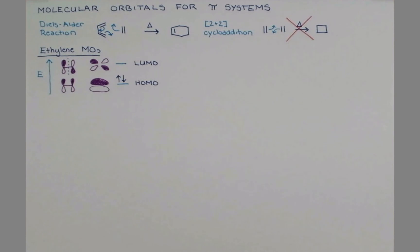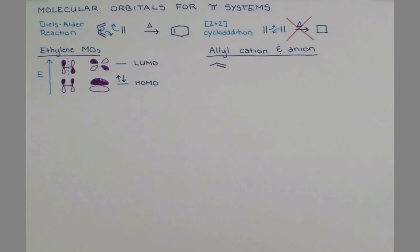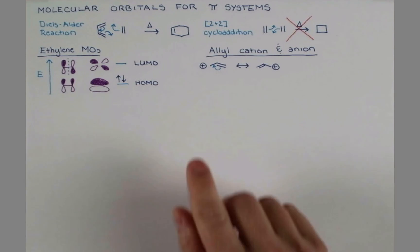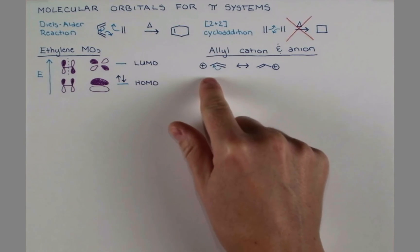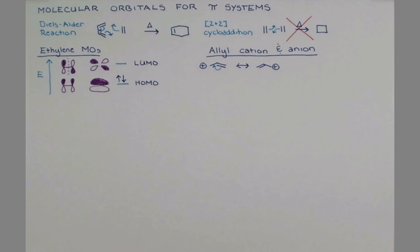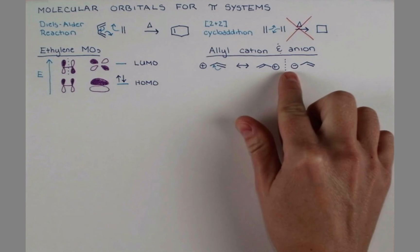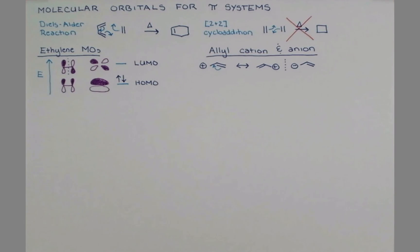Now let's look at the allyl cation and anion to see how the HOMO and LUMO may change. The allyl cation is a three-carbon system containing an alkene and a carbocation. We can draw resonance for this cation by pushing these electrons over, which results in a resonance form where the positive charge moves. The allyl anion has its pi system in conjugation with the anion, and we can push two arrows to show the resonance form.